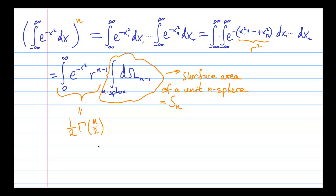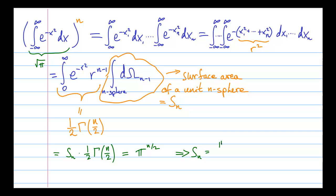Now, we go back to the original expression, where we took the integral of the Gaussian and raised it to the nth power, and we know that this integral of the Gaussian gives us the square root of π, because we computed it at the very beginning. And so we know that the expression is equal to this square root of π to the nth power. But now we can solve for the surface area of the unit n-sphere, and it gives us this.